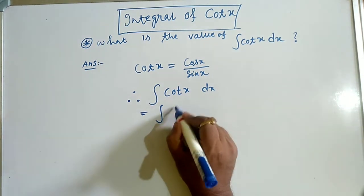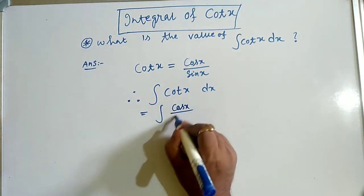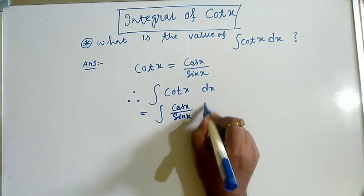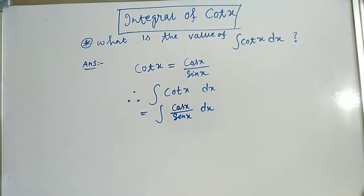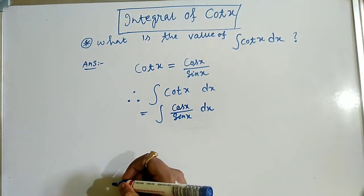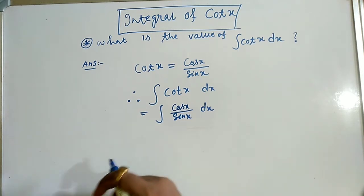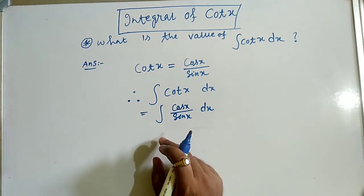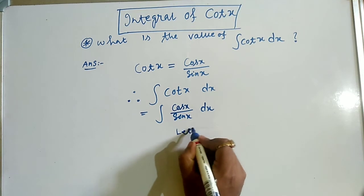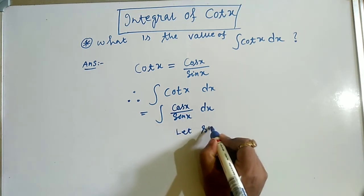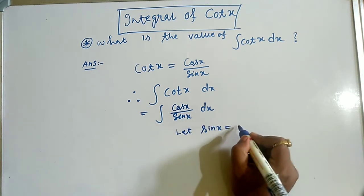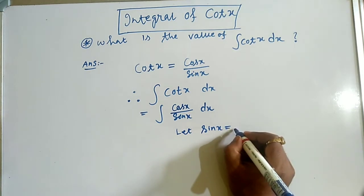Previously, cos(x) over sin(x) into dx. Now we will use the substitution process. What is the substitution process? Let us take the denominator sin(x) equals to some variable quantity, suppose t.